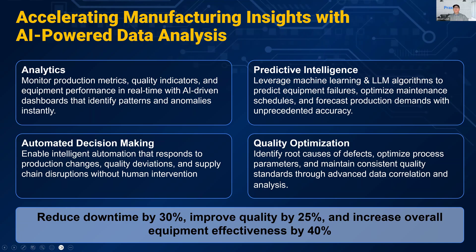Automated decision-making: based on the feeds and information coming into the large language model, you can train or direct the model to make certain decisions based on certain criteria. And finally, quality optimization — we do downtime analysis and quality analysis. This tells you not only that you're having too many defects, but it can analyze and come up with a hypothesis and testing to figure out exactly what's causing that. All of those can generate quite solid ROI if you implement them.